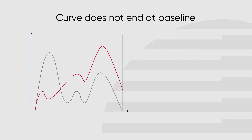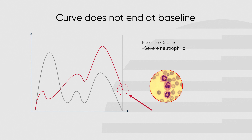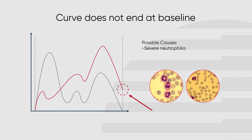If the curve does not end at the baseline and instead displays an abnormal high at the upper discriminator, this could be due to severe neutrophilia. In this example, the neutrophilia is due to CML (chronic myeloid leukemia), which can also result in an increase in myeloid cells. The reason is that the extreme amount of white blood cells clusters, making it complicated for the analyzer to read them one by one.